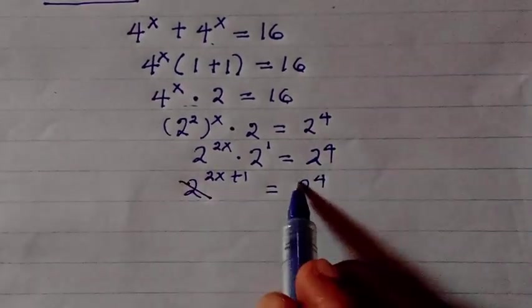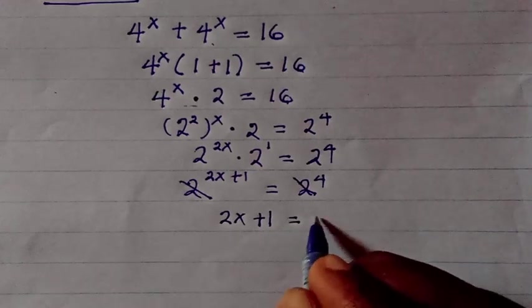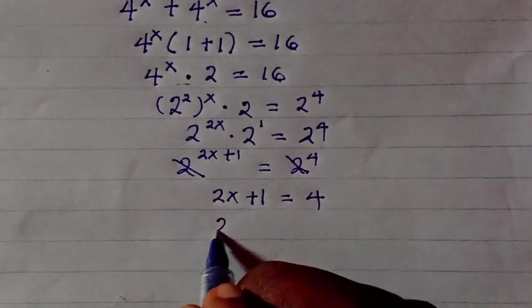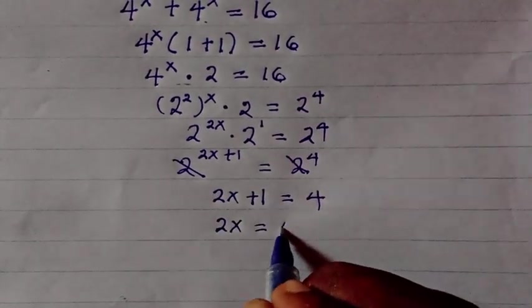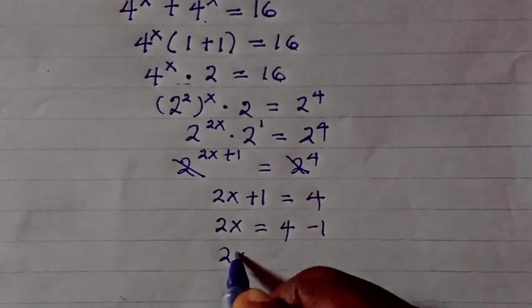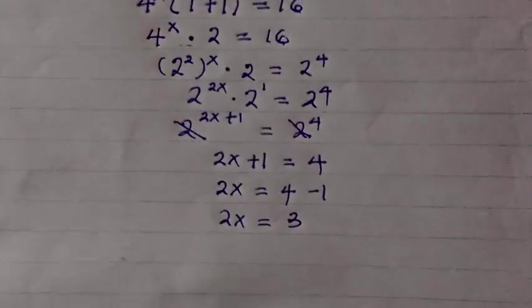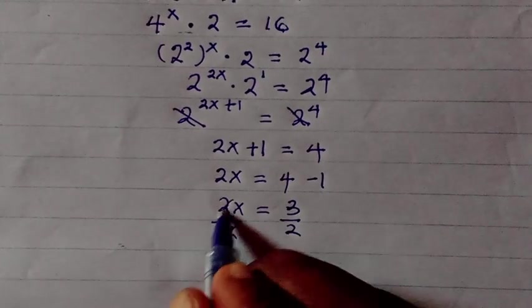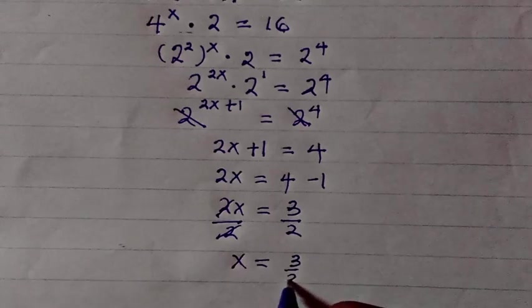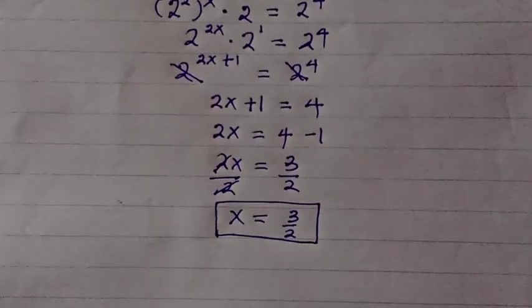Since the bases are equal, we cancel and have 2x plus 1 equals 4. Subtracting 1 from both sides gives 2x equals 4 minus 1, so 2x equals 3. Dividing by 2, we get x equals 3 over 2 — the same answer as Method 1.